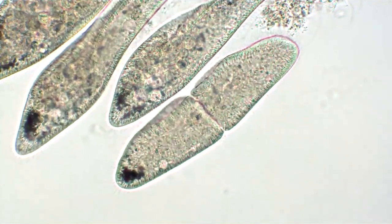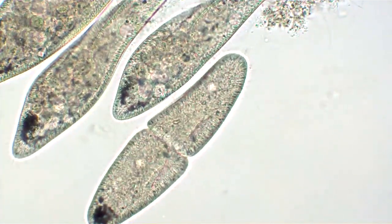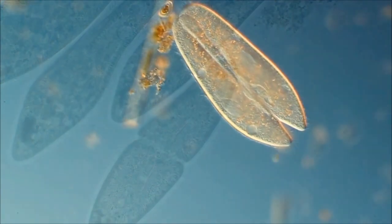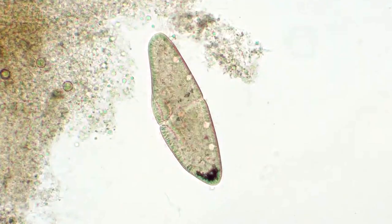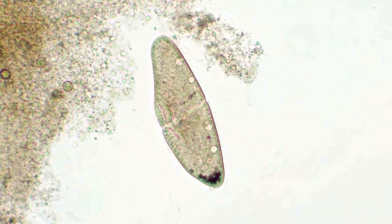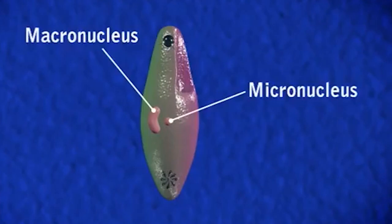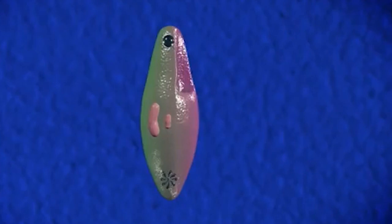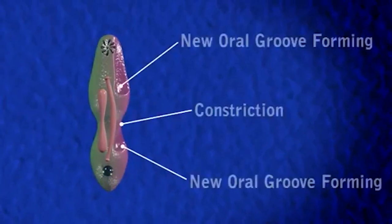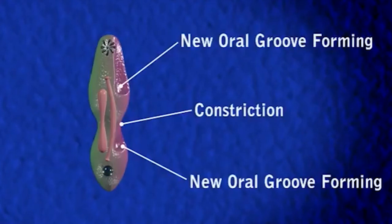Paramecium reproduces primarily by simple binary division, interrupted occasionally by a temporary union called conjugation, and a subsequent mutual fertilization. In binary fission the animal divides transversely. The first indication of a forthcoming division is seen in the micronucleus, which undergoes a sort of mitosis, its substance being equally divided between the two daughter nuclei. These separate and come to lie one near either end of the body. The macronucleus elongates and then divides transversely. The cytopharynx produces a bud which develops into another cytopharynx; these two structures move apart, the old cytopharynx advancing to the ventral middle line of the forepart of the body, and the new one to a similar position in the posterior half.